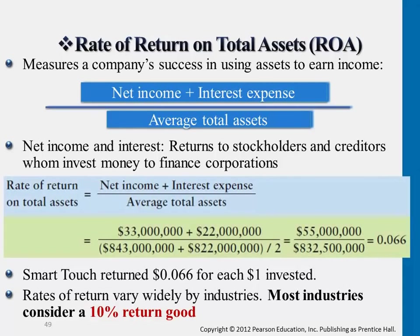The first ratio is rate of return on assets. The return basically refers to what the company has generated — meaning net income plus interest paid out to shareholders and creditors together. The numerator represents this return. The denominator is average total assets, which means beginning assets plus ending assets divided by 2.